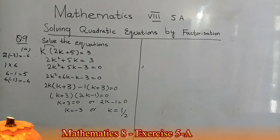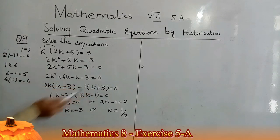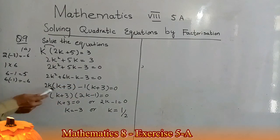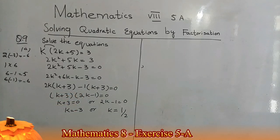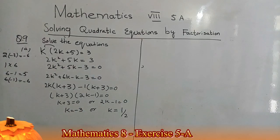From the first two terms I take 2k as a common factor: 2k(k + 3). From the last two terms I take −1 as a common factor: −1(k + 3). Now (k + 3) is common, giving (k + 3)(2k − 1) = 0. Either k + 3 = 0 giving k = −3, or 2k − 1 = 0 giving k = 1/2. That is the solution. That's enough for today; I will meet you in the next lecture.